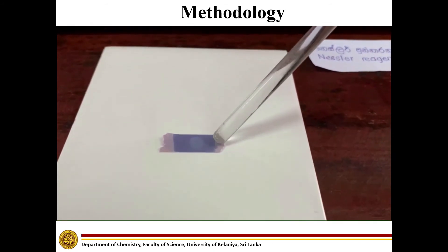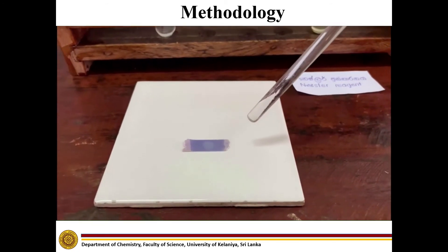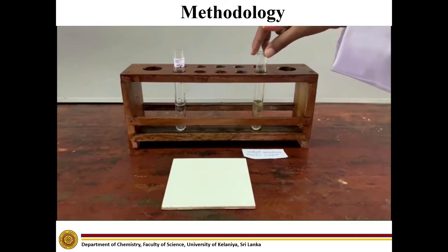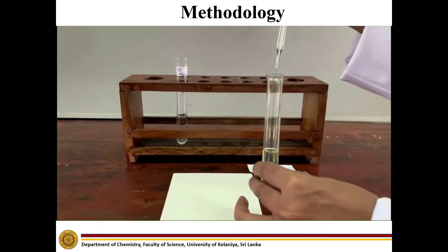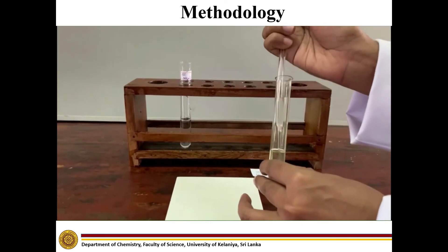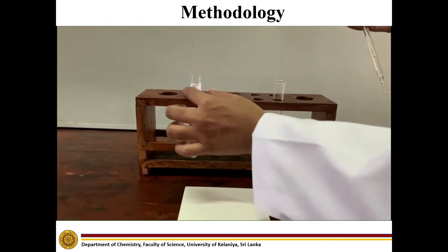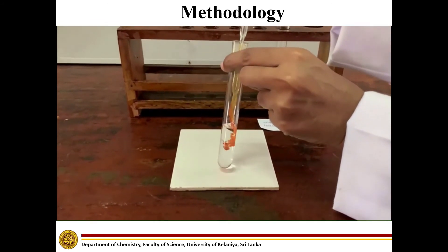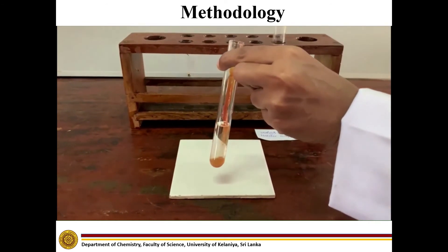It turns red litmus into blue. Brown color precipitation is observed with the Nessler reagent.